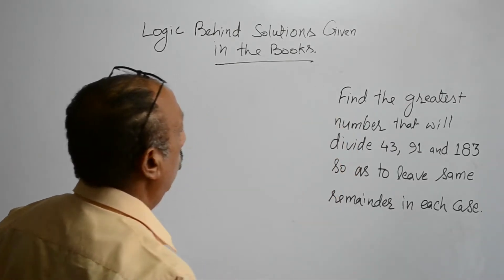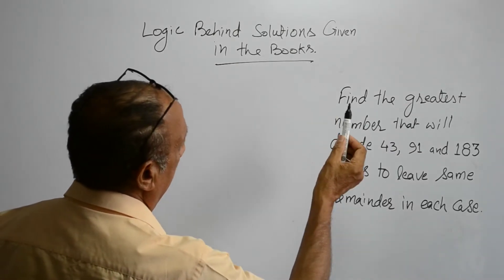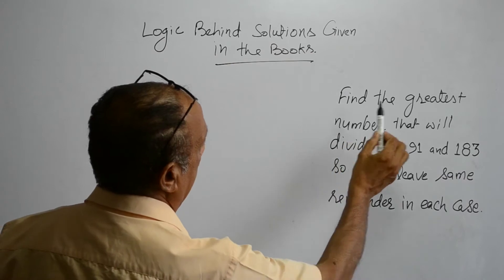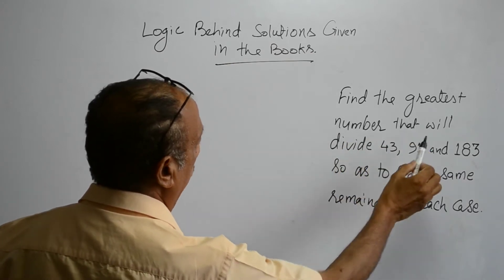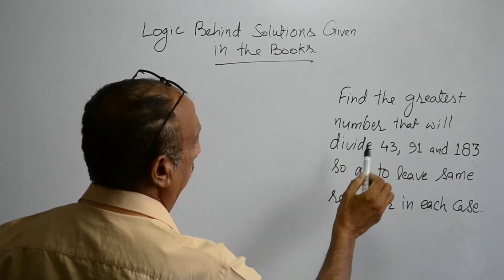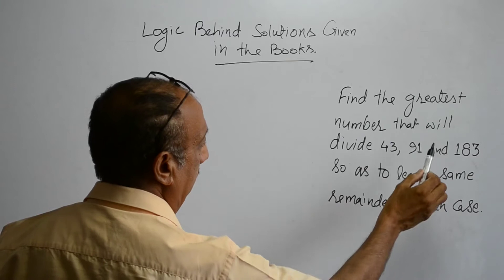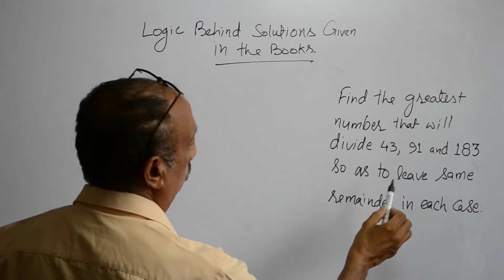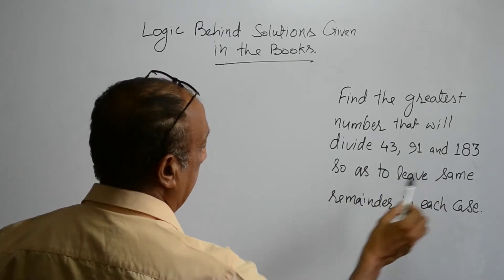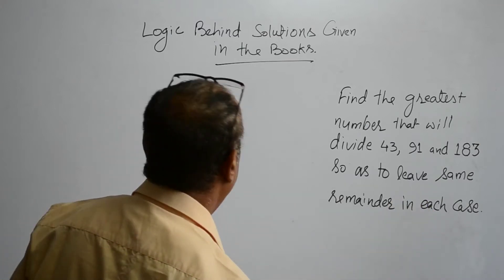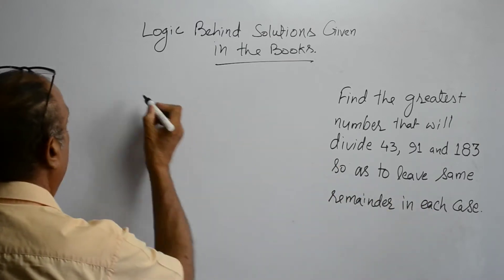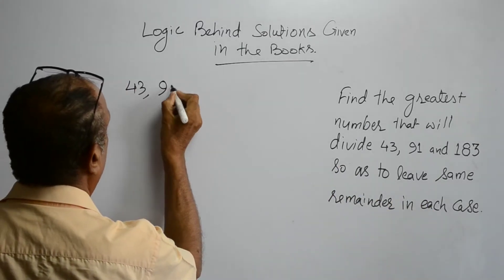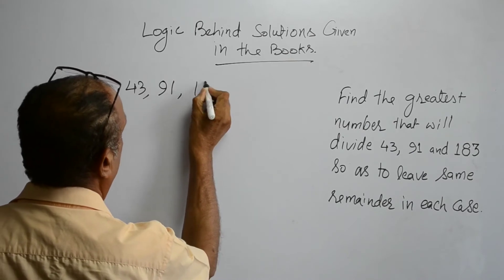Now look at this statement. Find the greatest number that will divide 43, 91 and 183 so as to leave the same remainder in each case. The numbers are 43, 91 and 183.